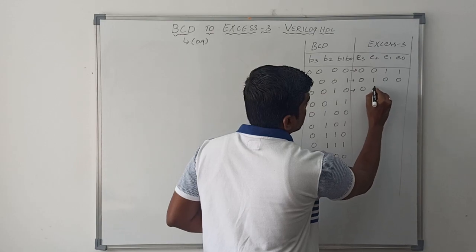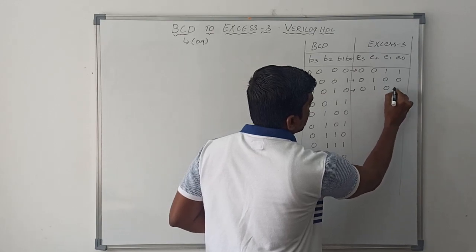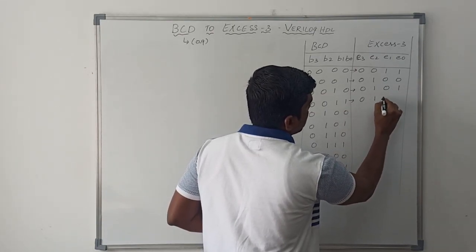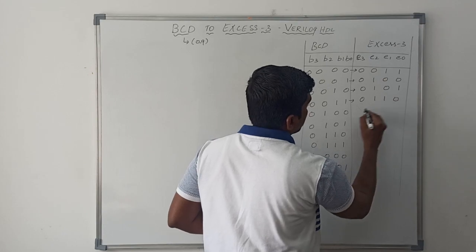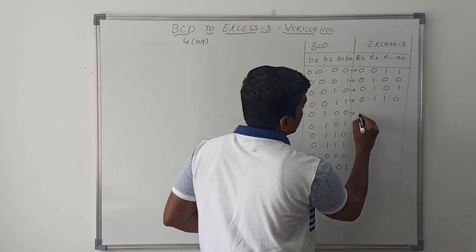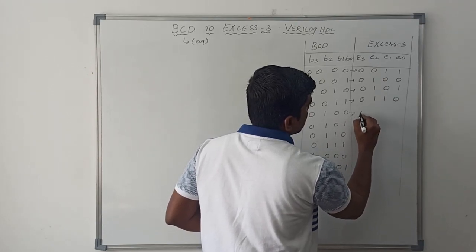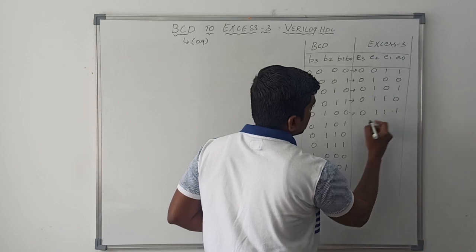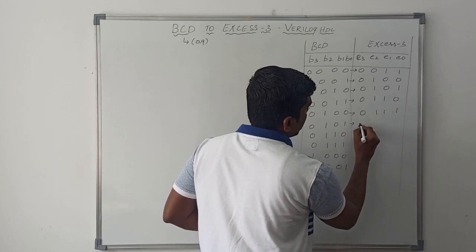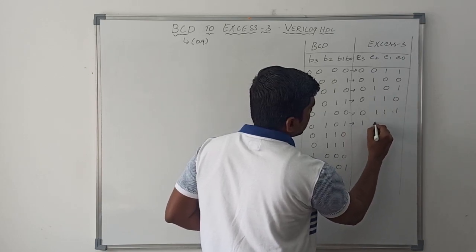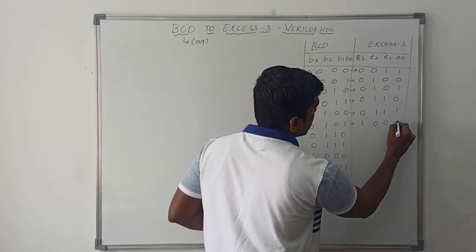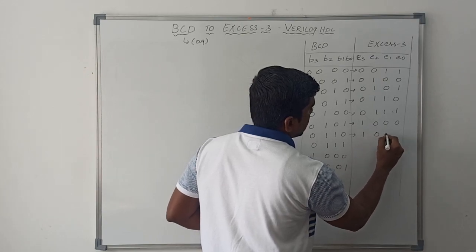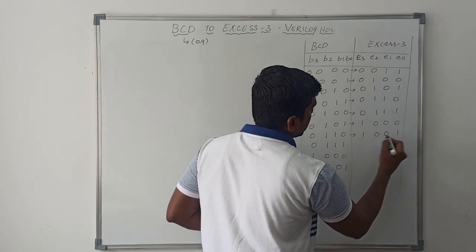Then 5 is 0101. 6 is 0110. 7 is 0111. 8 is 1000. Then 9 is 1001.